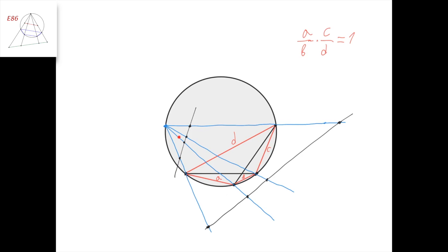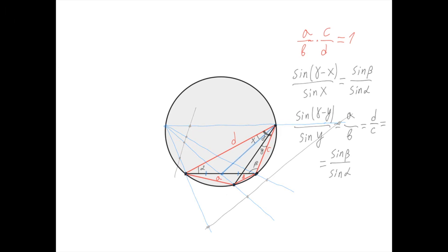Now let this point be the midpoint of this diagonal in the quadrilateral. Let's call this angle alpha and this angle beta. Let's call this angle here x and this angle here y. And also let this angle here in the quadrilateral be gamma, such that this triangle now has angles alpha, beta, and gamma.